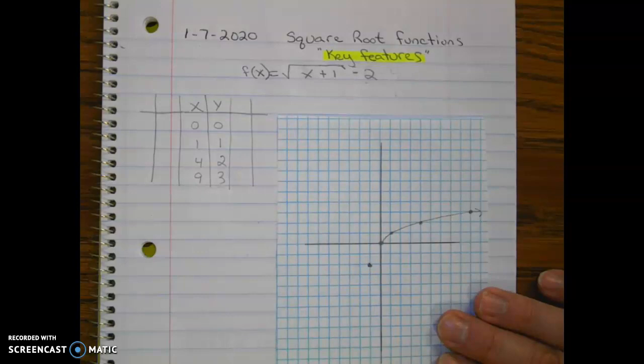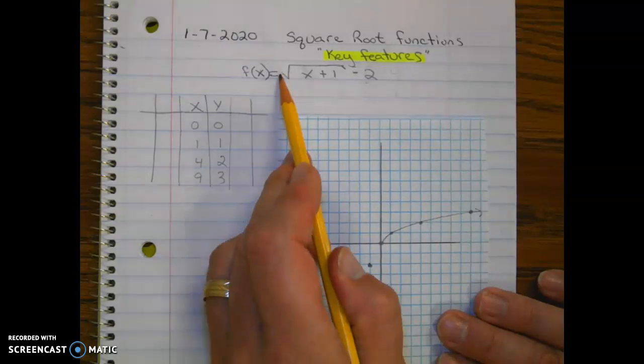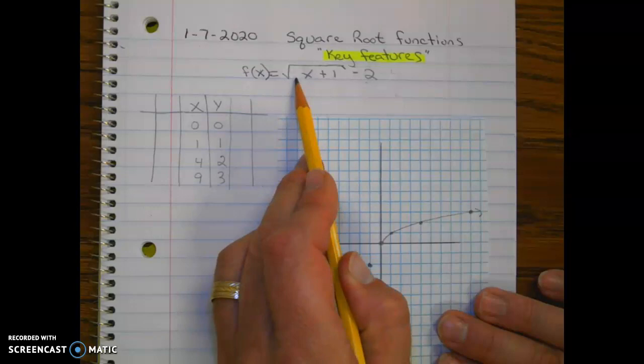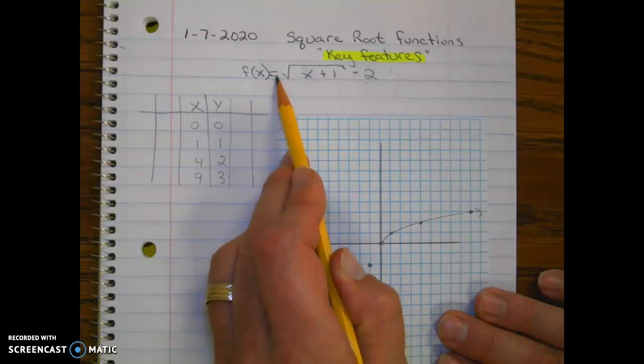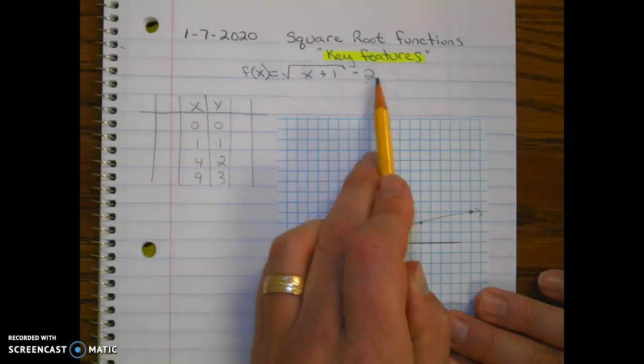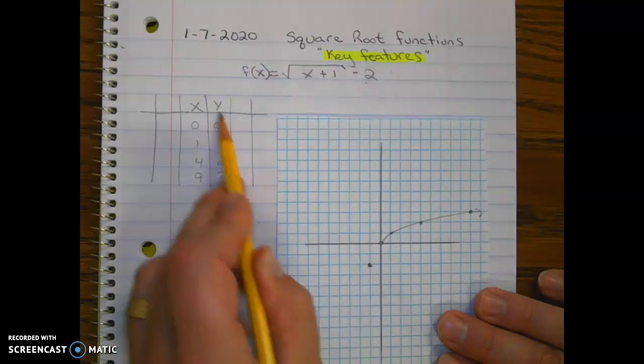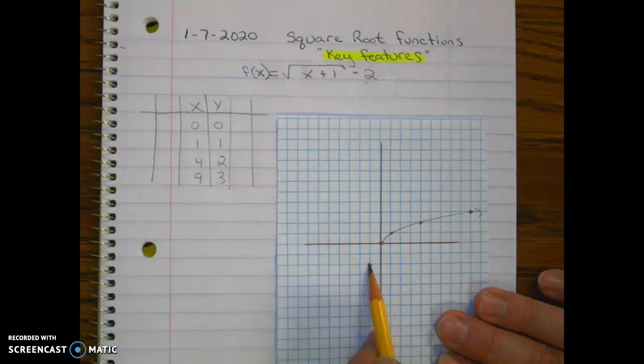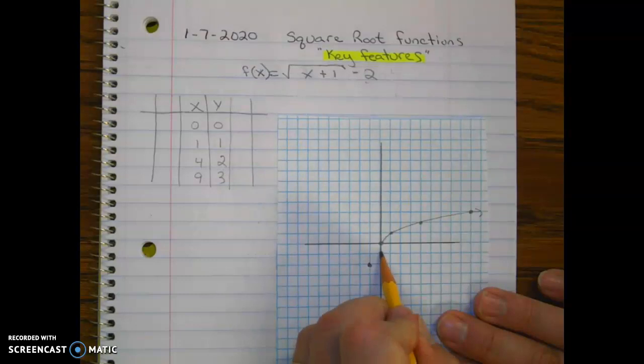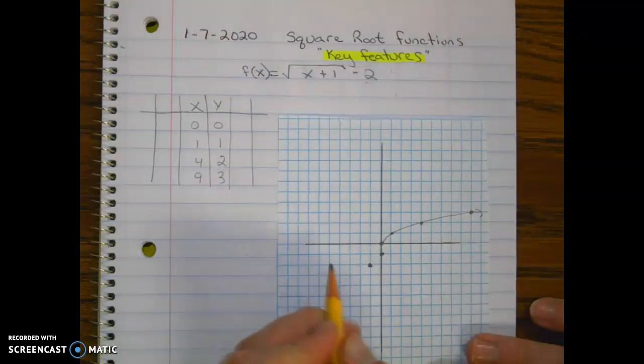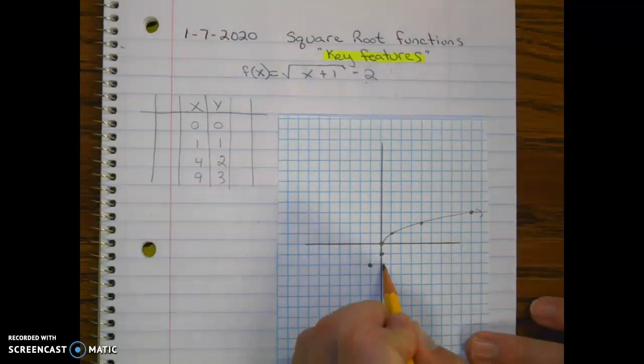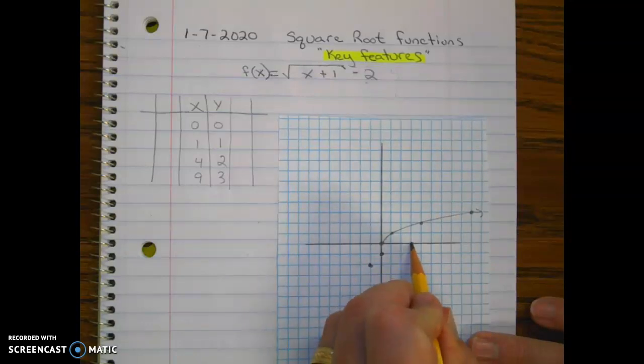Now notice there's no stretches, compressions, reflections involved here. So once we've done these two translations, we could just go ahead and follow this pattern starting from here as our new starting point. So this would be our new zero zero, then one one, four two, and nine three.